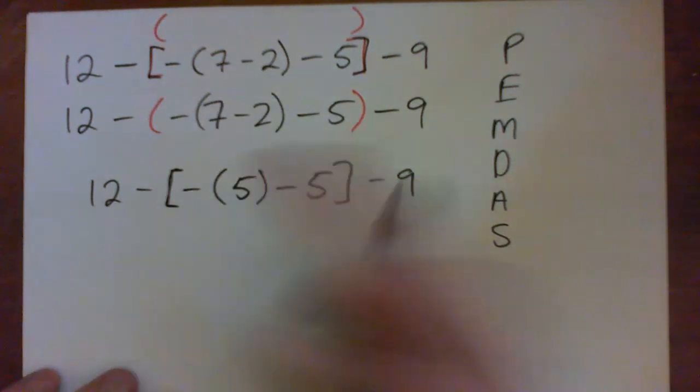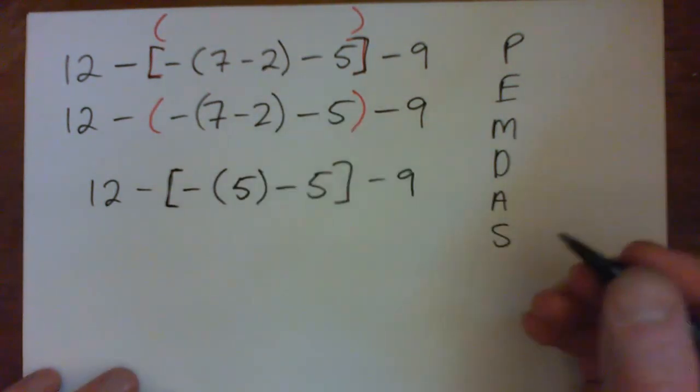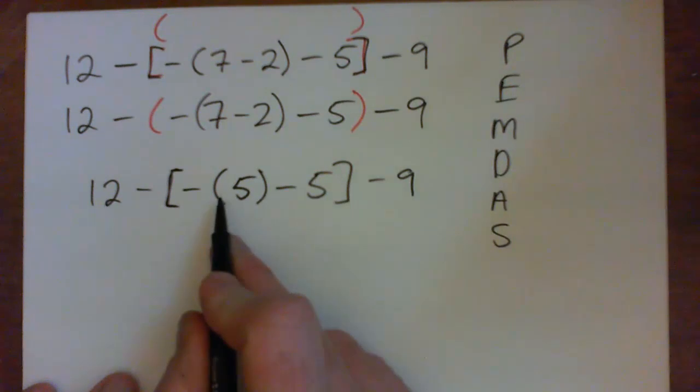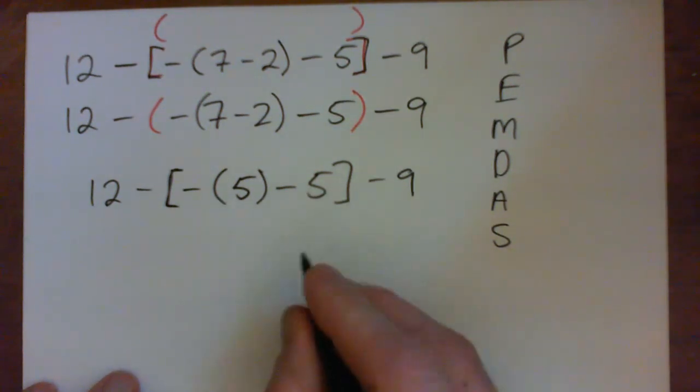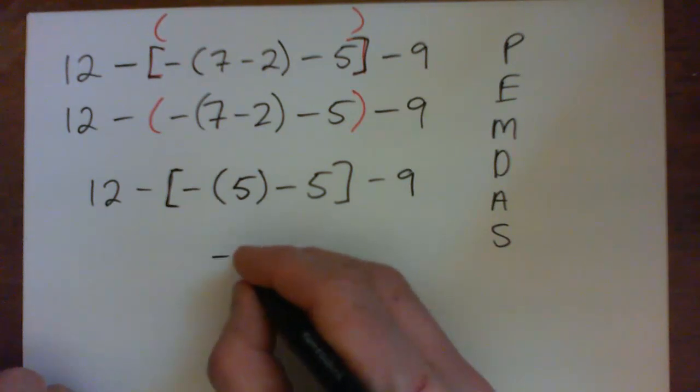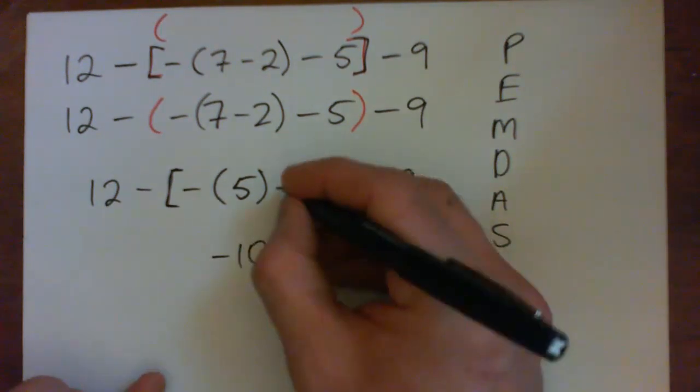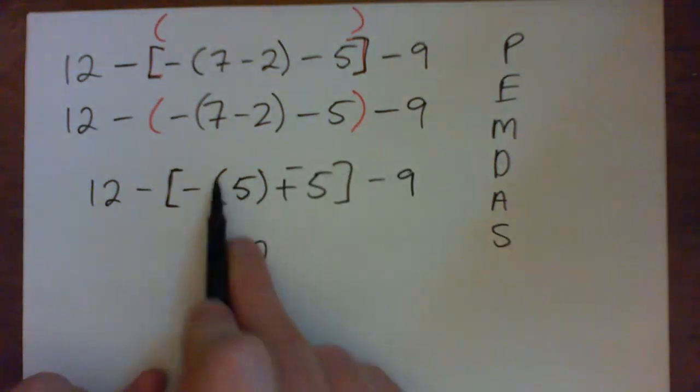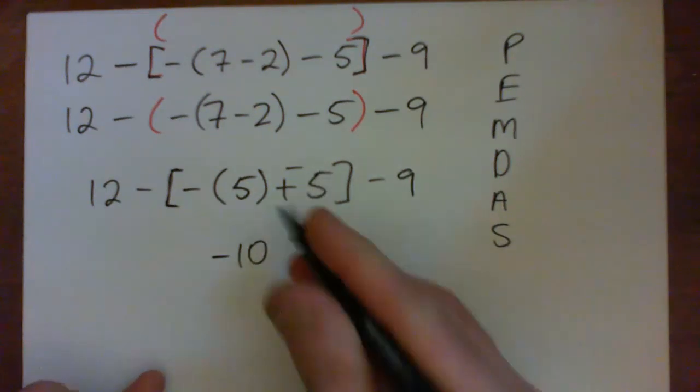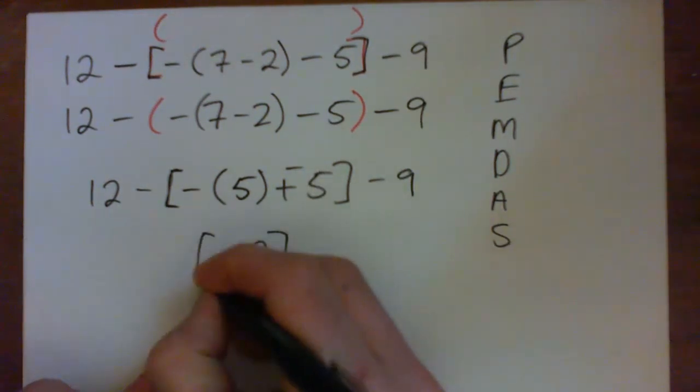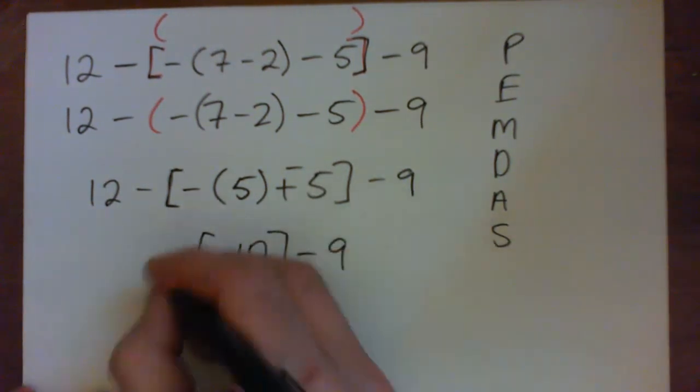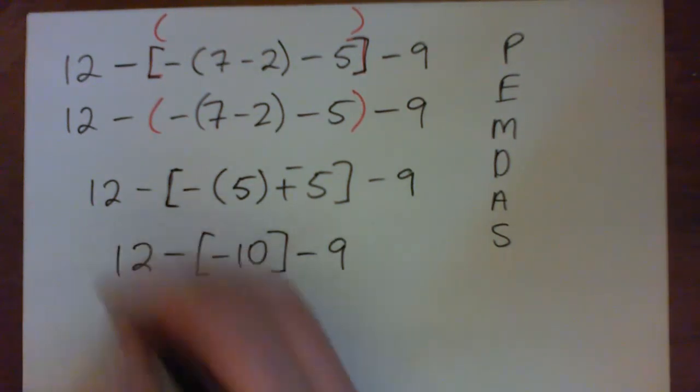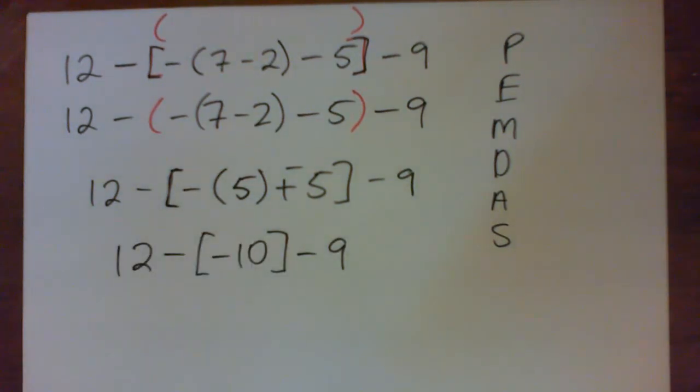So it's just negative 5 minus 5. I'm in debt by 5 dollars, I subtract 5 dollars, now I'm in debt by 10 dollars. Or you can go 5 bad guys plus 5 bad guys makes 10 bad guys. And now write it all out again, be patient, write it out again, take your time. There's no rush. Again, make one mistake, you're wrong. So we have 12 minus negative 10, then minus 9.